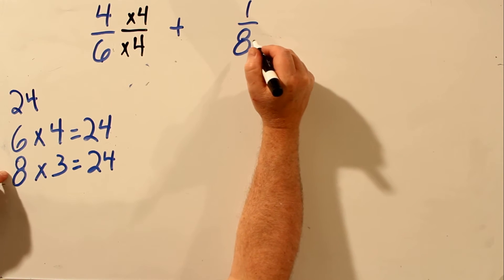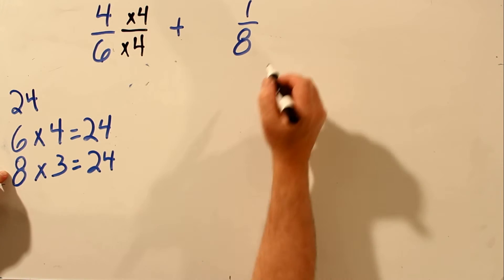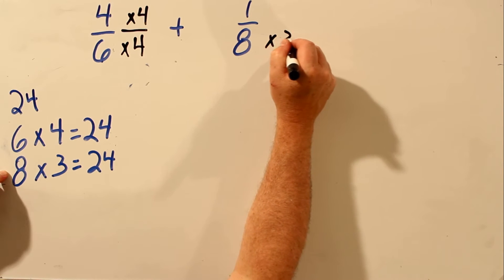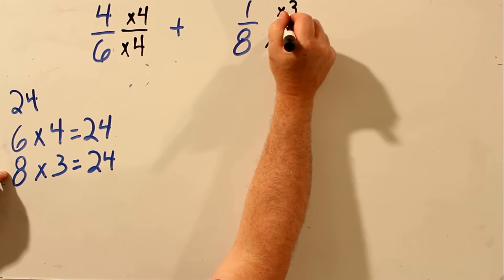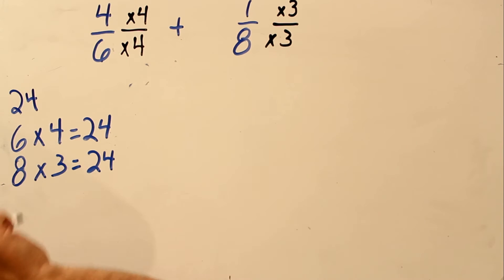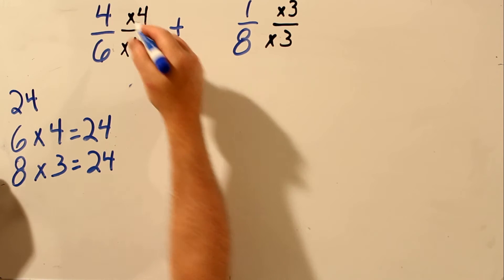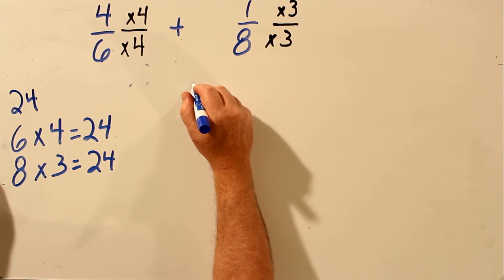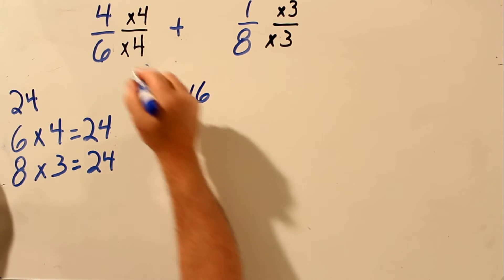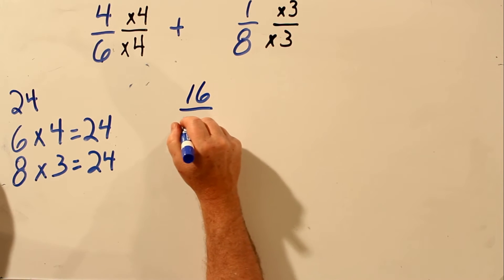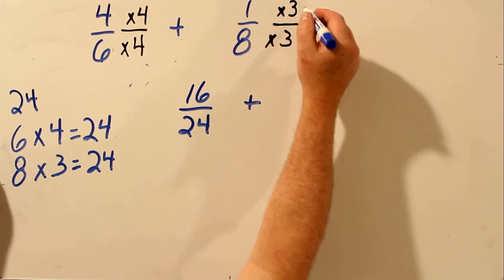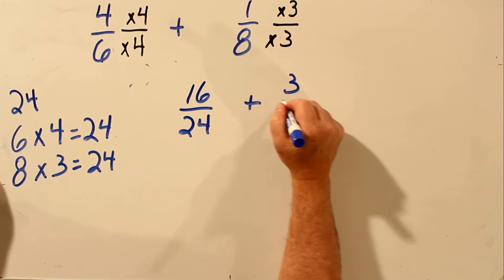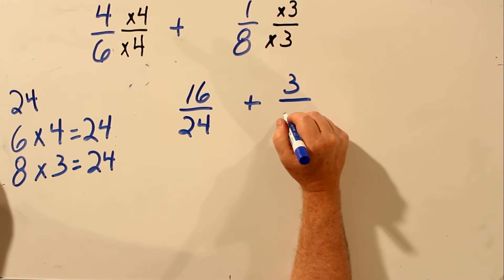Over here, you have to multiply 8 by 3 to get 24. And if you multiply 8 by 3, you have to multiply the top number by 3. So on the top here, we have 4 times 4 is 16, and 6 times 4 is 24. And over here, we have 1 times 3 is 3, and 8 times 3 is 24.